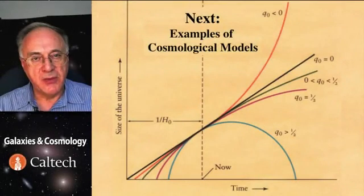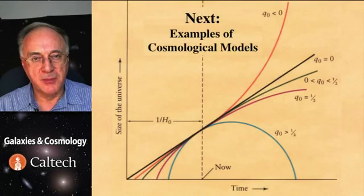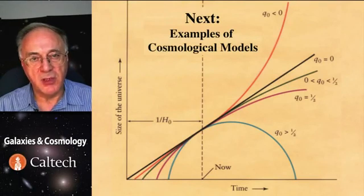So this is how we solve the Friedmann equation. The output of it is really how the density of the universe changes as a function of time. Next time, we'll consider some examples of actual cosmological models.